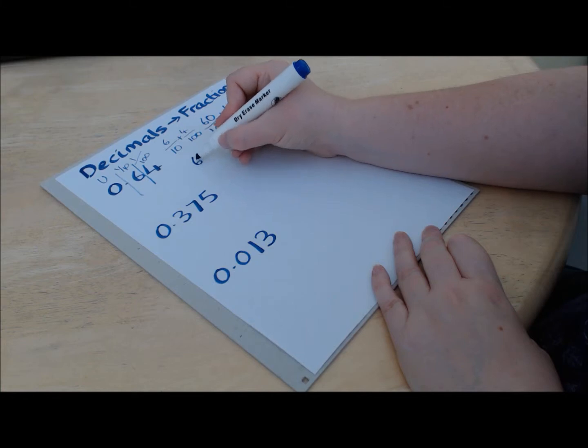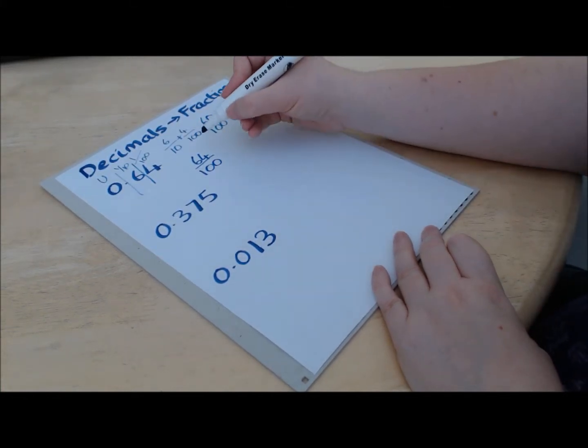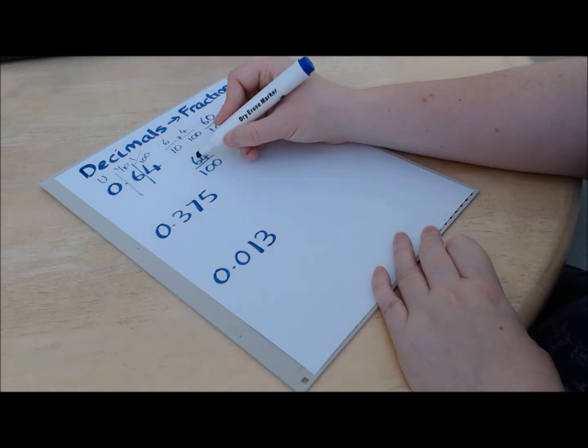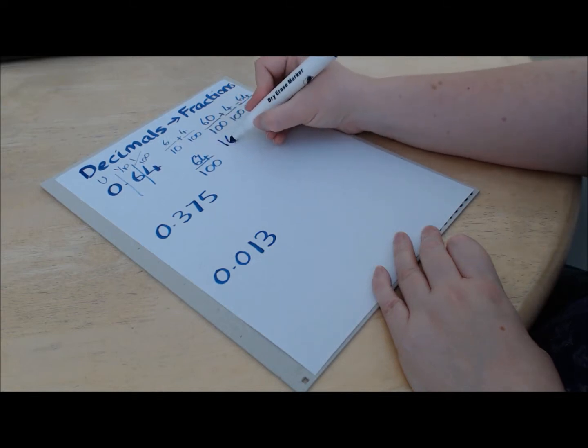We now have 64 over 100 to simplify. So we can divide both by 4. If we divide the top by 4, 4s into 6 go 1 with a remainder of 2. 4s into 24 go 6.